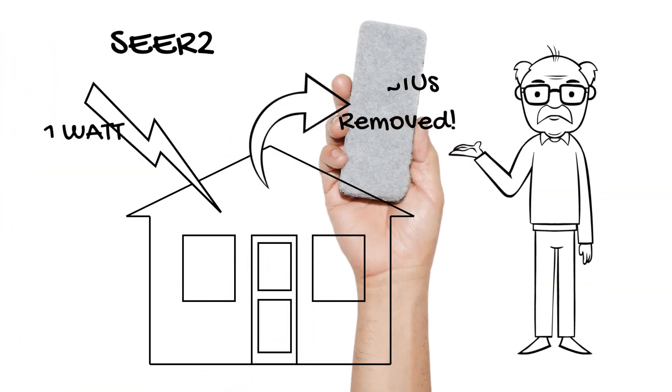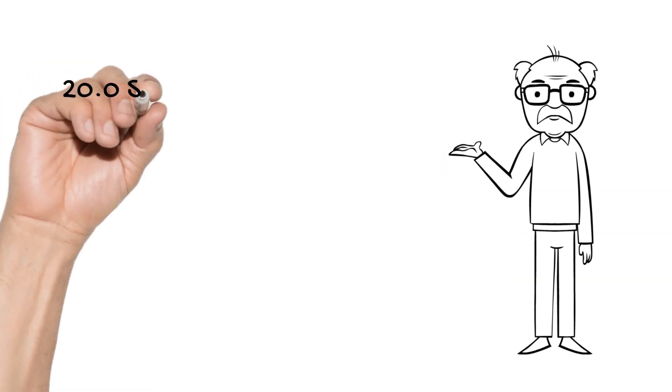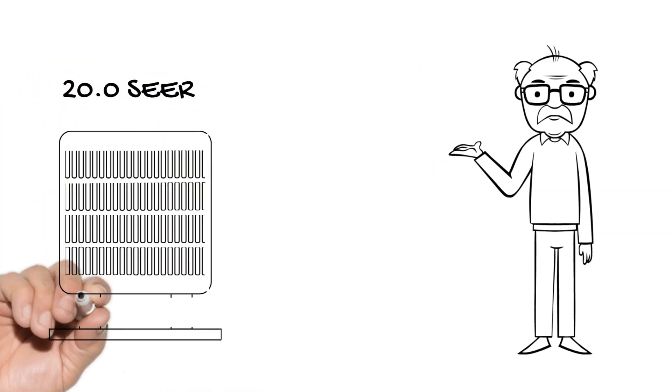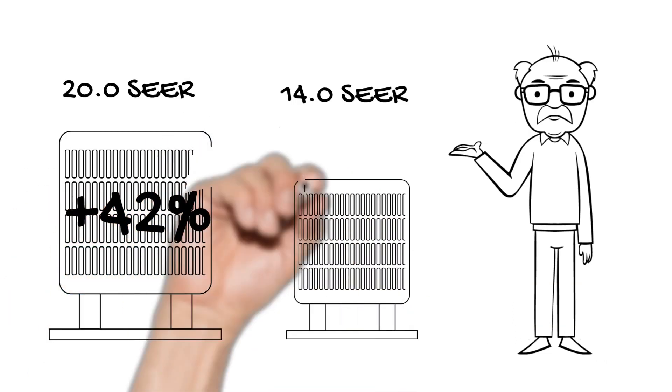Thus, if you have a 20.0 SEER2 unit, 20 BTUs would be removed per watt of power. That makes a 20.0 SEER2 unit 42% more efficient than the 14.0 SEER2 model.